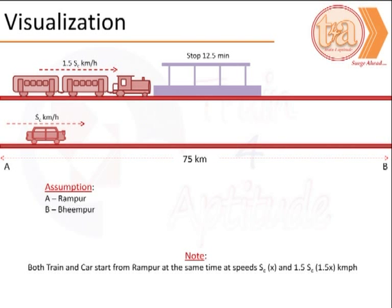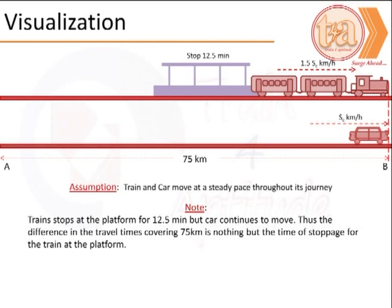The speed of the train thus is 1.5 SC km per hour or 1.5 X km per hour. The total stops can be imagined as a stop on a single platform for 12.5 minutes also. This visualization shows once a destination point B is reached. The assumption here is that the train and car have moved steadily throughout the journey, excepting for the train stopping at the station or the platform for 12.5 minutes.